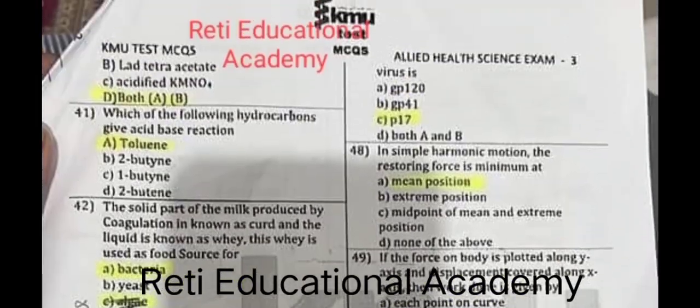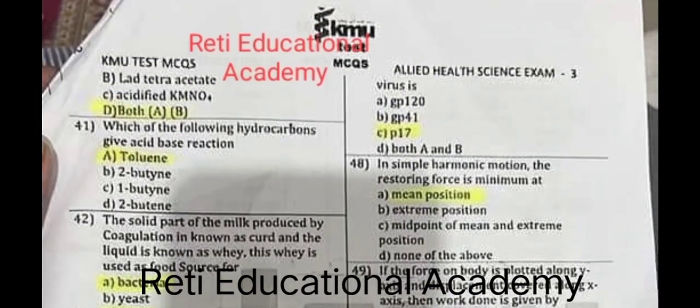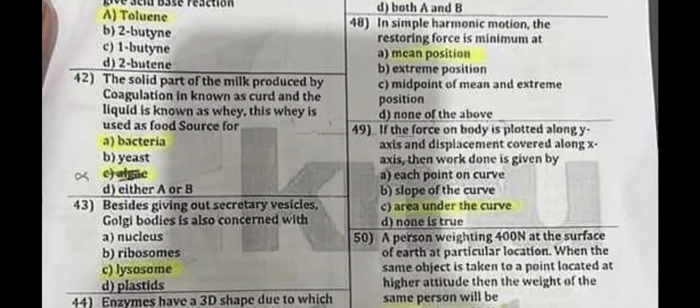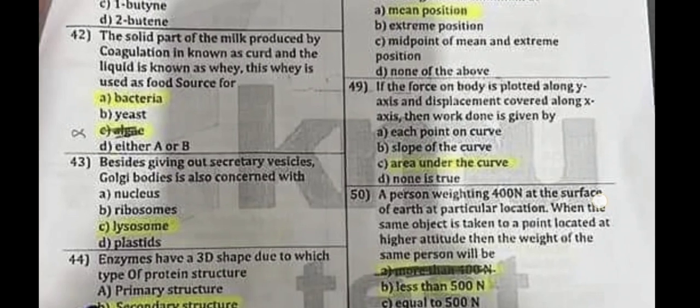Question number 47: The protein that forms the matrix of HIV virus is p17. Question number 48: In simple harmonic motion, the restoring force is minimum at the mean position. Question number 49: If force on a body is plotted along the y-axis and displacement along the x-axis, then work done is given by C: the area under the curve.